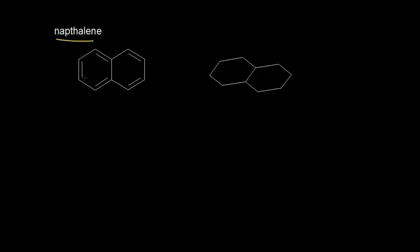If I were to analyze a naphthalene molecule using our criteria for aromaticity, I could look at each carbon in naphthalene and see that each carbon has a double bond to it, so each carbon is sp2 hybridized. And therefore each carbon has an unhybridized p orbital. There are a total of 10 carbons in naphthalene, and going over here to the drawing on the right, each of those carbons has a p orbital.